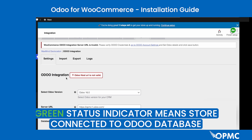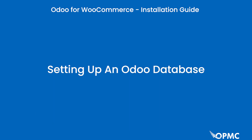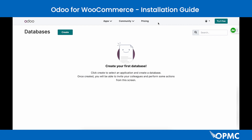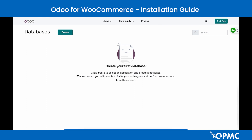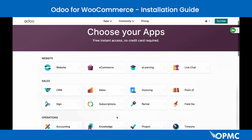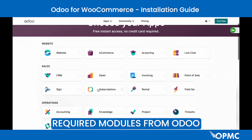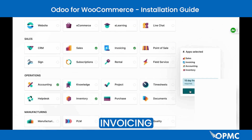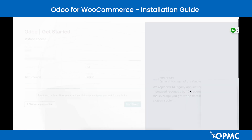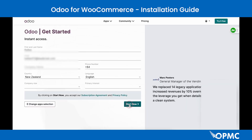Signing up to Odoo and accessing your API key is super easy. Simply sign up with an email and password and you'll be prompted to create a new database from your database page. Hit Create, then select the required modules — Sales, Accounting, Inventory, and Invoicing are required for working with WooCommerce. Continue into details and hit Start Now.